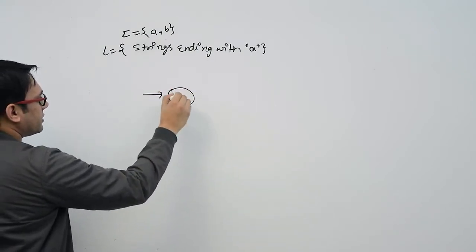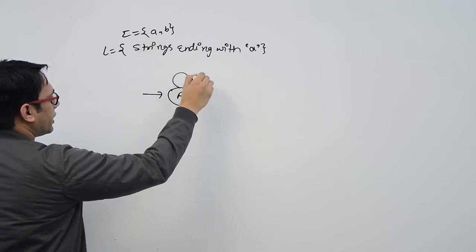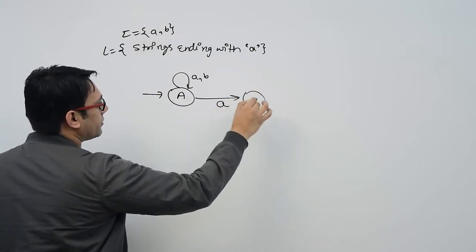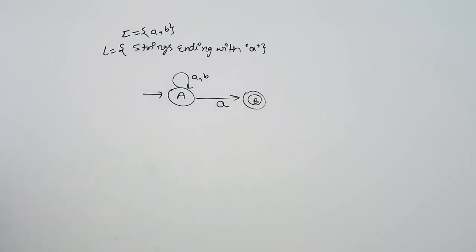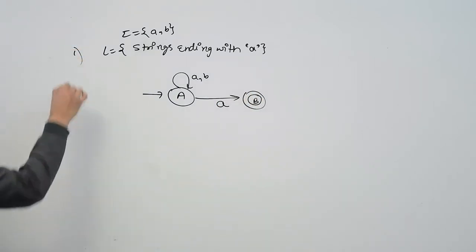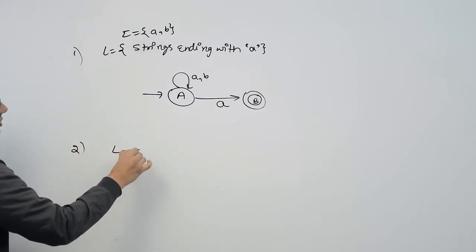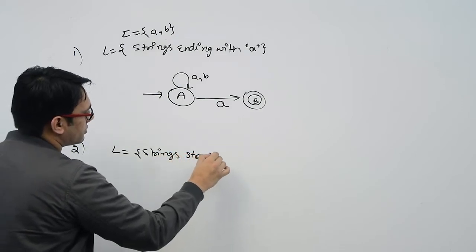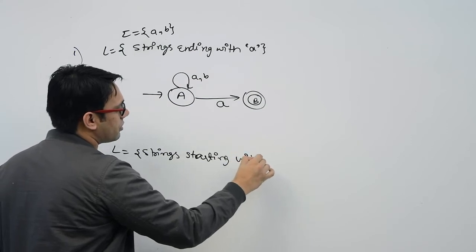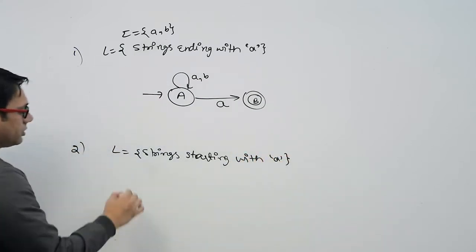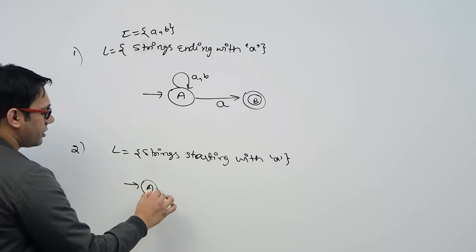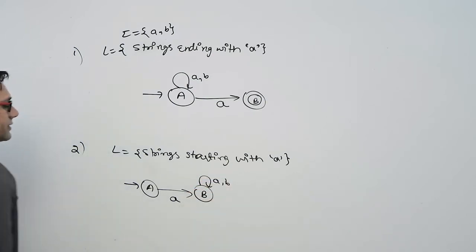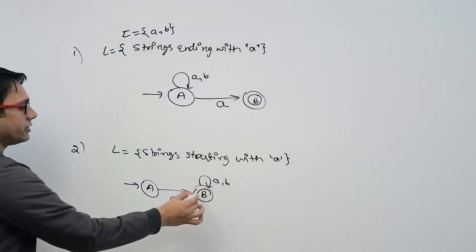For strings ending with 'a', you can make an NFA like this: the initial state accepts any number of A's or B's at the beginning, and as soon as you get a single 'a' you go to state B and accept it. The second language is strings starting with small 'a'. You are at initial state A, and as soon as you get a single 'a' you go to state B and accept it. These are two different languages.